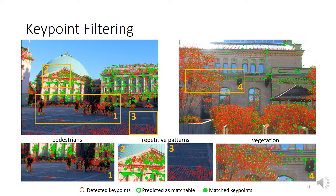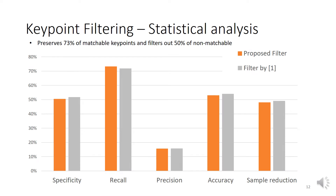The detected points are shown in red and those that survived classification in green. Solid green circles present those that were finally matched. The proposed method filtered out many of the red points that lie on error-prone areas like pedestrians, repetitive patterns, vegetation, and homogeneous areas. According to the recall, the proposed algorithm manages to preserve 73% of the matchable keypoints. According to the specificity, it filters out 50% of the non-matchable keypoints.